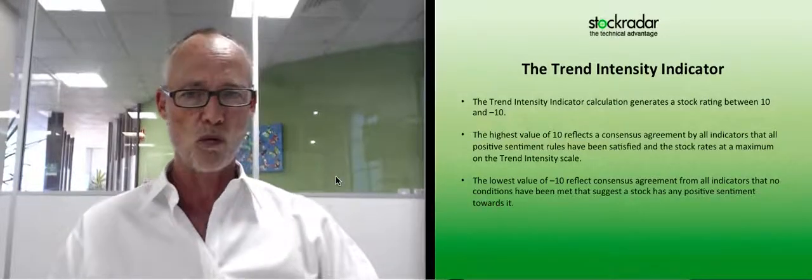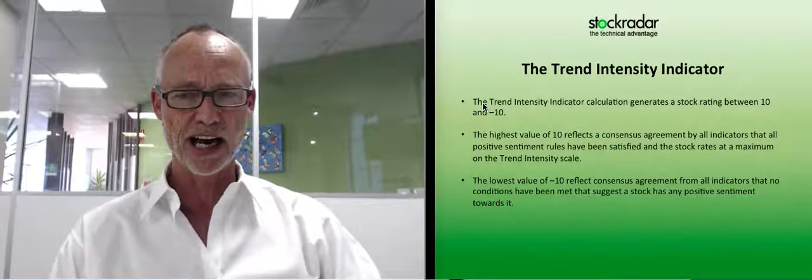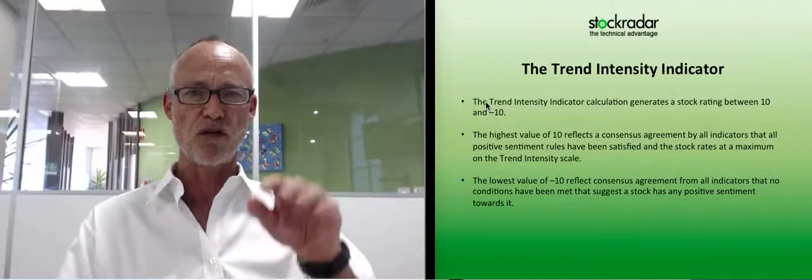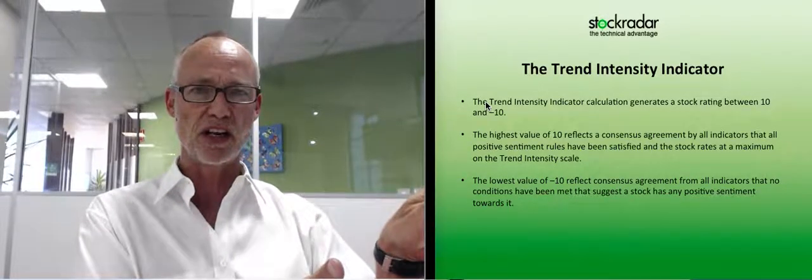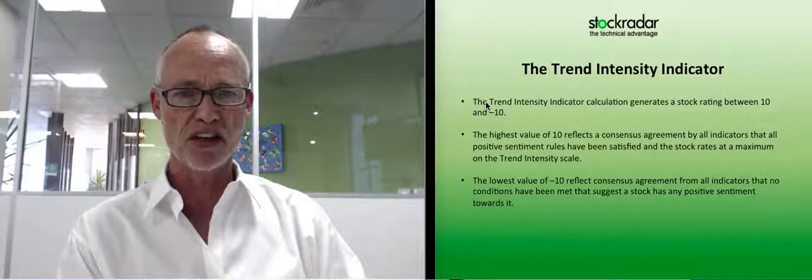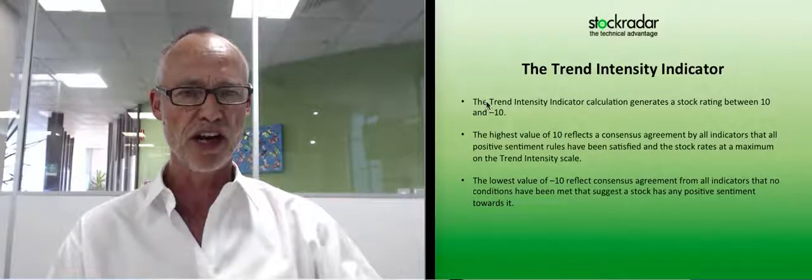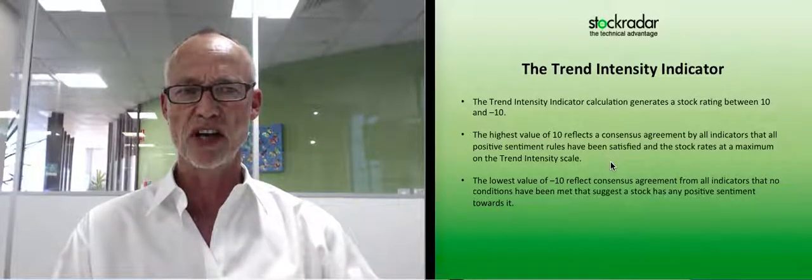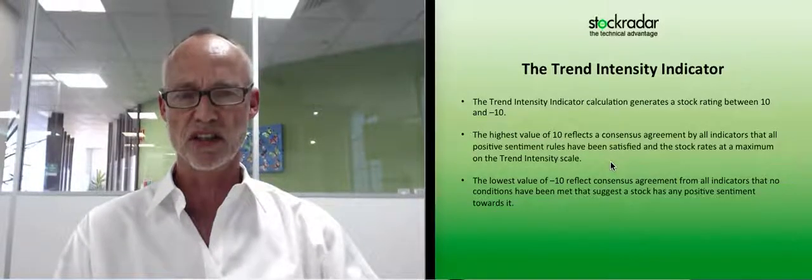All four different values are weighted into the indicator, which can go to a maximum of 10 and a minimum of minus 10. That generates a stock rating for each stock between those values. The highest value of 10 reflects the consensus agreement by all indicators that all positive sentiment rules have been satisfied and the stock rates at a maximum on the trend intensity scale.